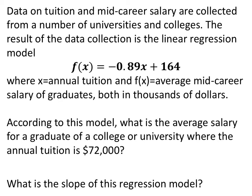According to this model, what is the average salary for a graduate of a college or university where the annual tuition is $72,000? All right, to answer this question, we need to look first at what this $72,000 is. So the $72,000 we can see from the wording there is the annual tuition, and X is annual tuition.